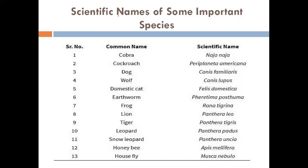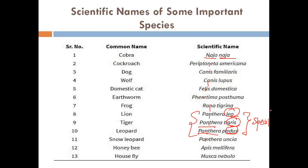Some important scientific names you should know: Cobra is Naja naja; Lion is Panthera leo; Tiger is Panthera tigris; Leopard is Panthera pardus. Notice that lion, tiger and leopard all share genus Panthera — they are closely related, and their morphology and features are also quite similar. The genus is general while the species name is specific.